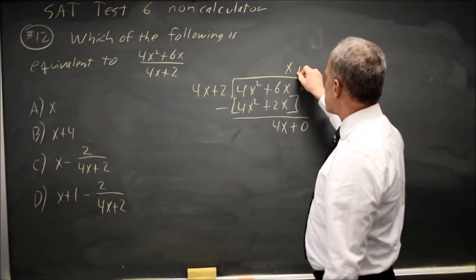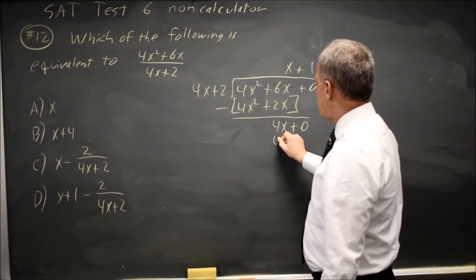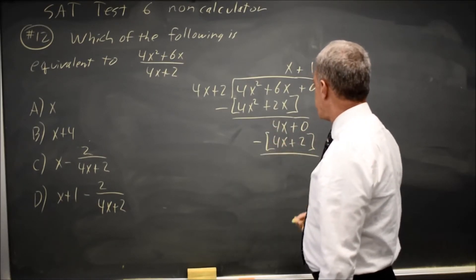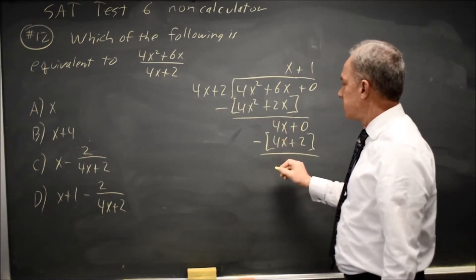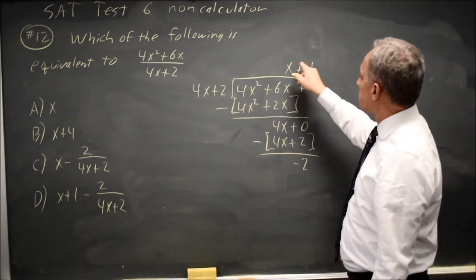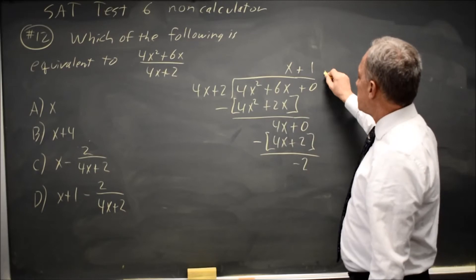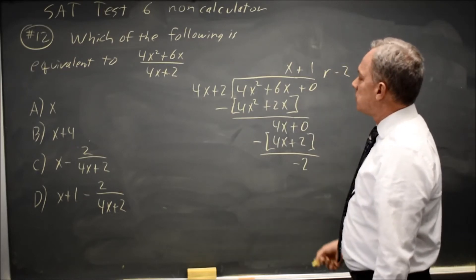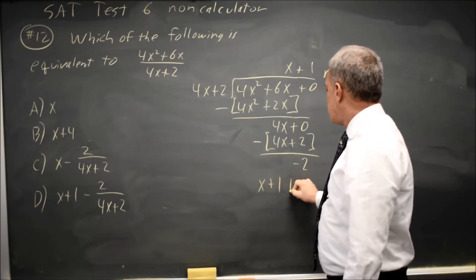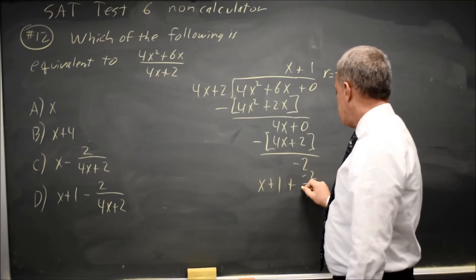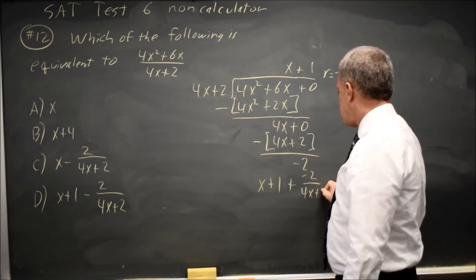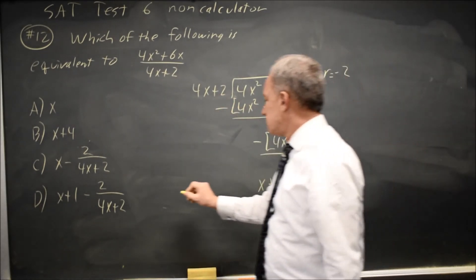4x plus 2 goes into 4x one time, giving me 4x plus 2. I'm going to subtract that whole quantity. 4x minus 4x is 0. 0 minus 2 is negative 2. So my answer is x plus 1 with a remainder negative 2, which we're going to write as x plus 1 plus negative 2 over my original denominator 4x plus 2. And that is choice D.